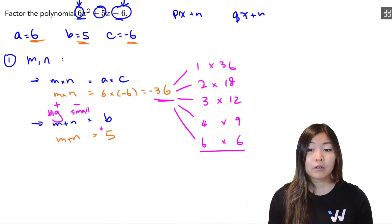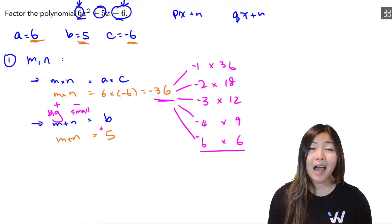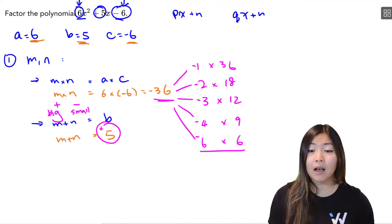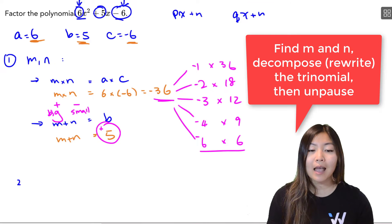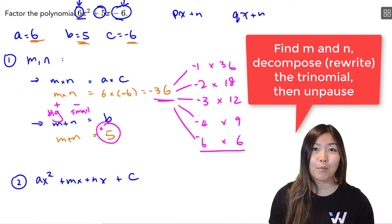So remember, the bigger number is the positive one. The smaller one is the negative. So these are my five possibilities. Which one of these five possibilities add up to positive 5? Figure out which one that is, and then decompose your trinomial into ax squared plus mx plus nx plus c, and then unpause the video.